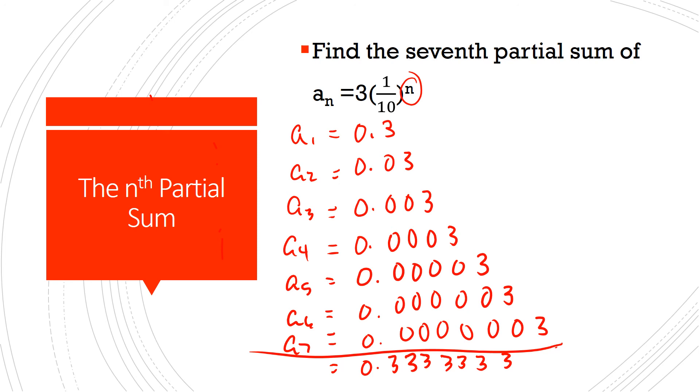And it's going to be 0.33333333. The seventh partial sum of a_n equals 3 times (1/10) raised to the power of n. Shazam!